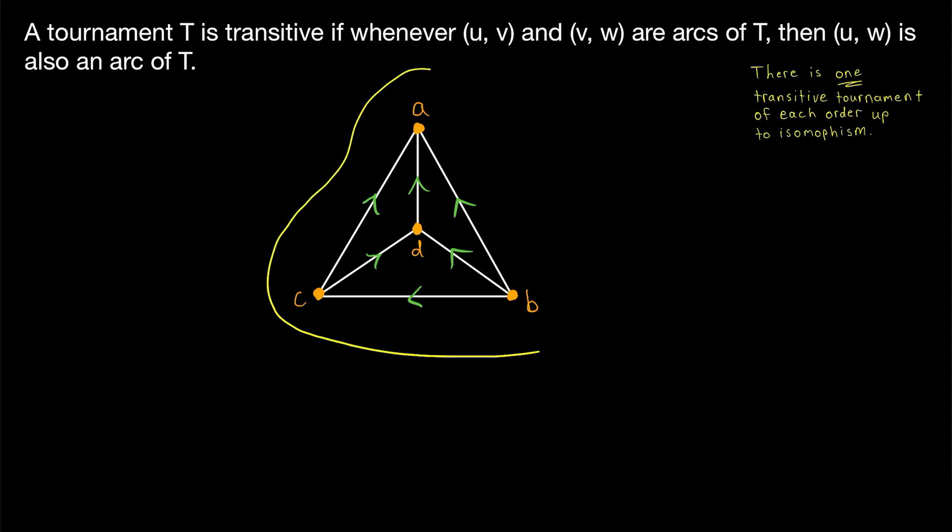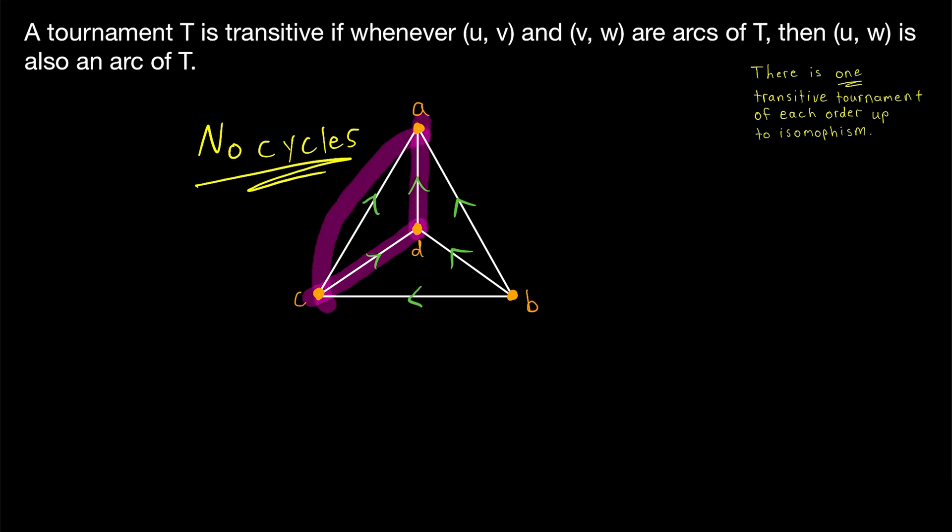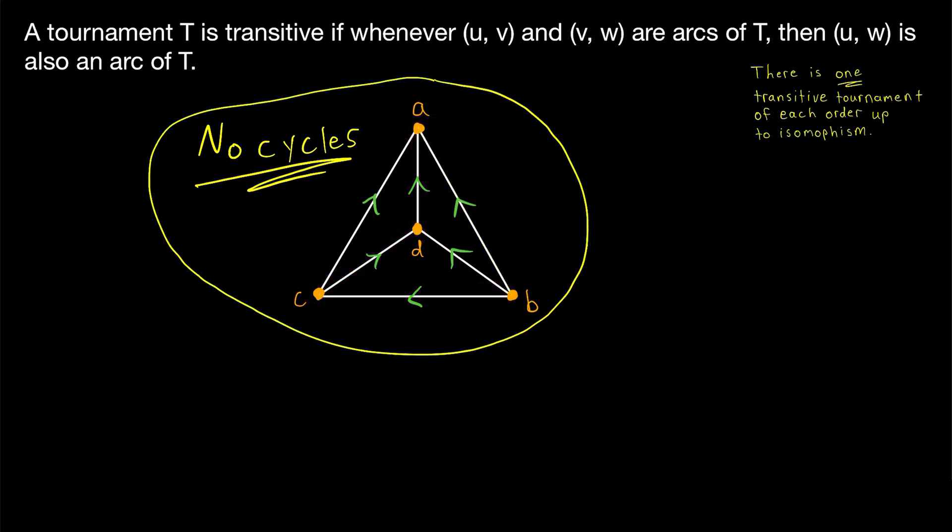If you inspect this transitive tournament some more, another thing you might notice is that it has no cycles. We might try to go around a cycle here from C to D, then from D to A, but we can't go from A to C to complete the cycle because this arc is going from C to A. We could try making a four cycle, going from B to C, then to D, then to A, but we can't go back to B because this arc is going to A. So there are no cycles in this transitive tournament.